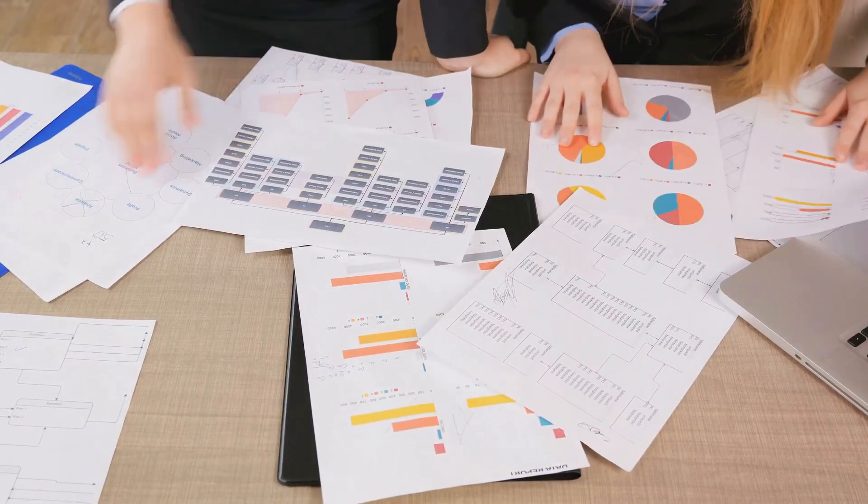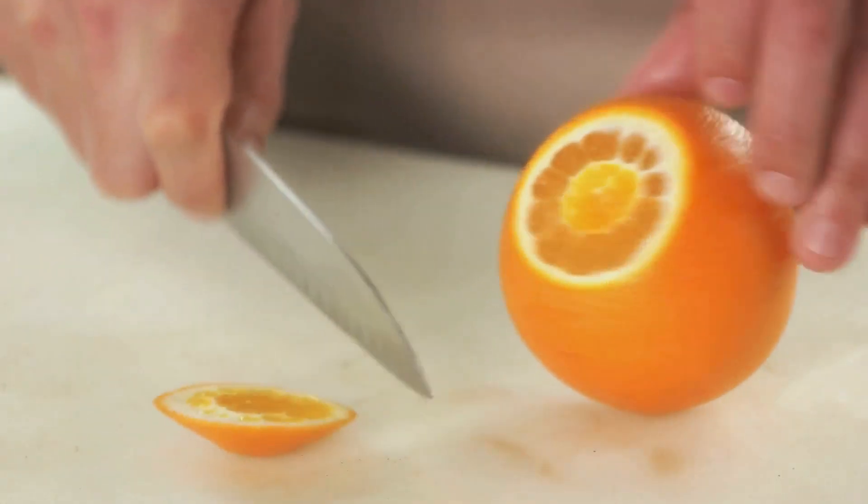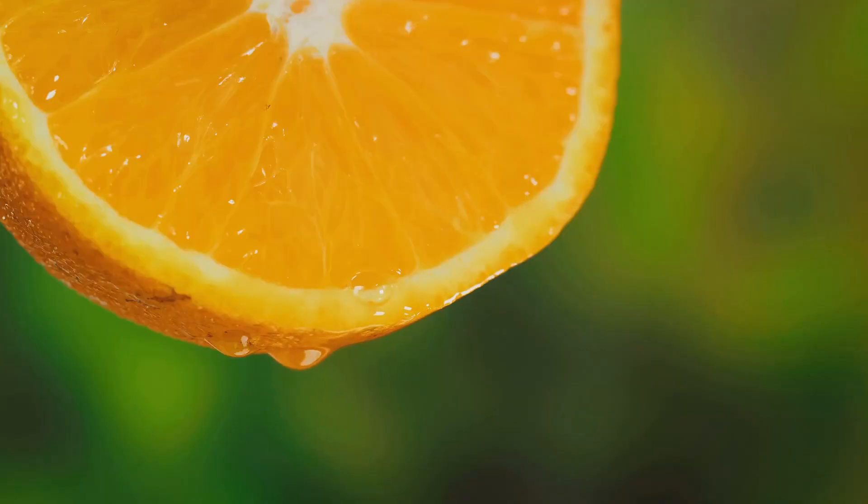and separately, it would calculate the probability of the fruit being an apple based on its shape. It would then multiply these probabilities together to get the overall probability of the fruit being an apple.